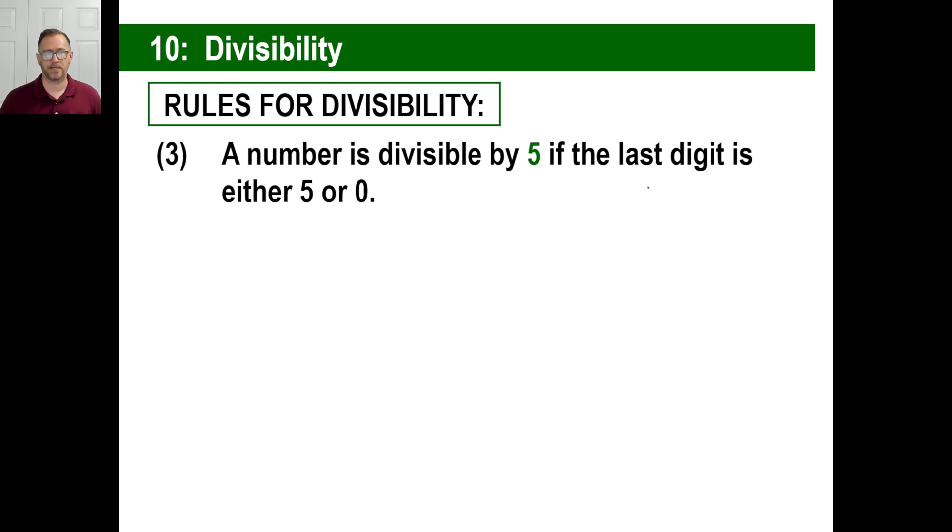Rule number three. A number is divisible by 5 if the last digit is either 5 or 0. So 1,055 divisible by 5. 62,800,490 is divisible by 5 because really the number 10, of course, is divisible by 5.